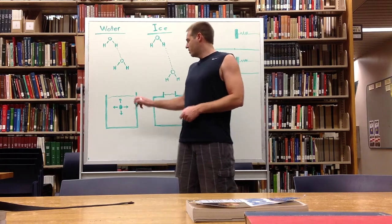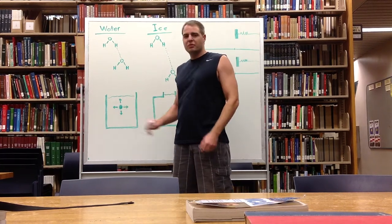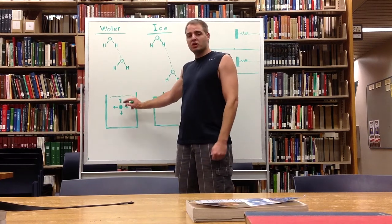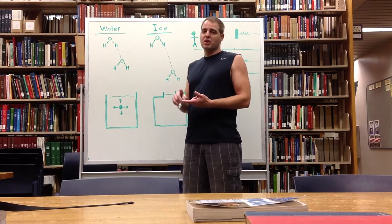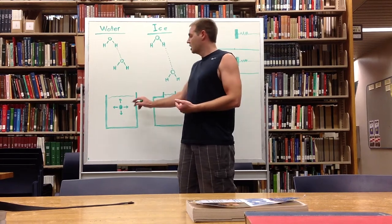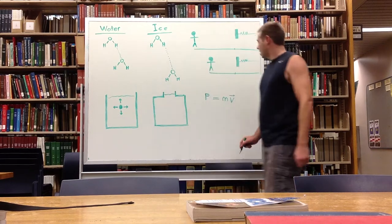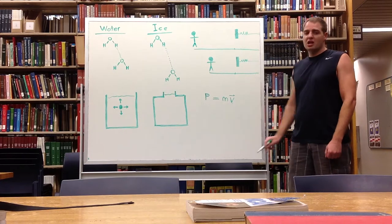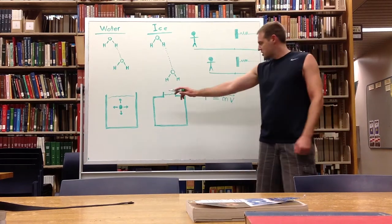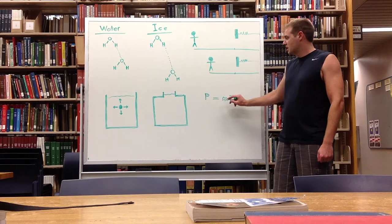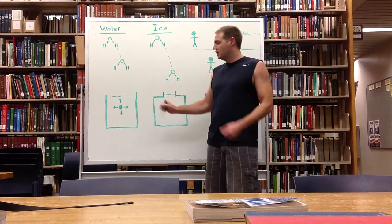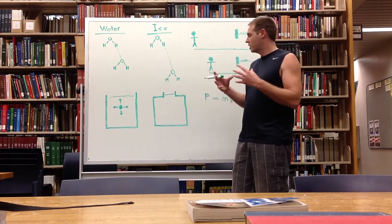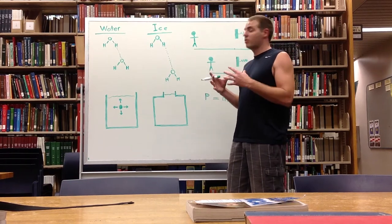If we want to think about the momentum of this system, the momentum is going to have two components: the speed of the particles, and the number of particles moving in one direction as opposed to another direction. I've written a formula here for momentum: momentum equals mass times velocity. But for this system, the mass is the number of particles moving in one direction versus the number of particles moving in another direction, if we want to think about which way the overall momentum is going.